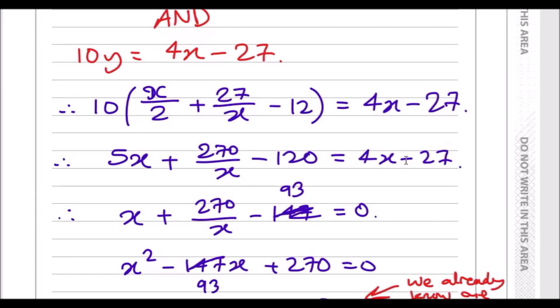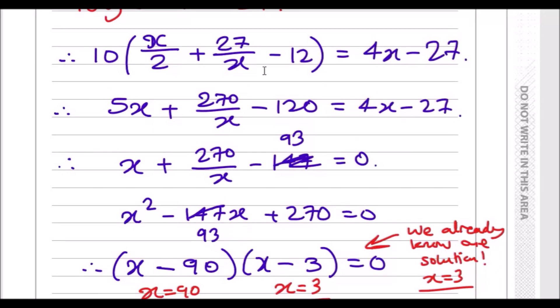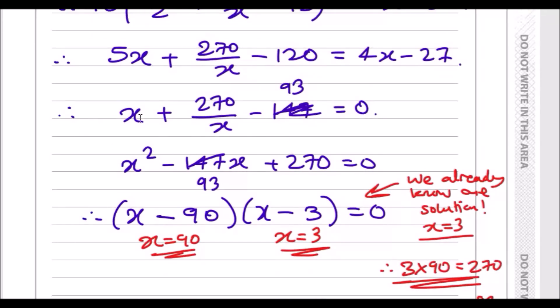Then just expand and simplify. 10 times all of this, you get 5x plus 270 over x minus 120. Collect, throw everything to the left side, so subtract 4x and plus 27. You should get x minus 93, and then realize that when you have an equation like this and you're not sure what to do, try multiplying things.